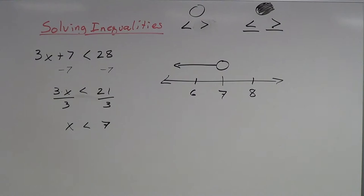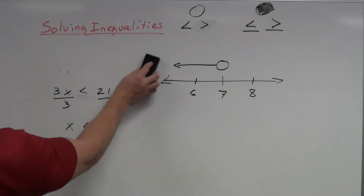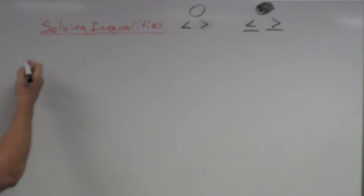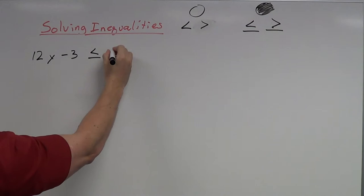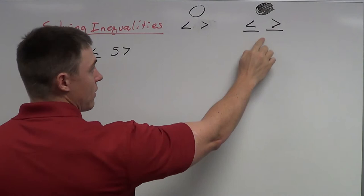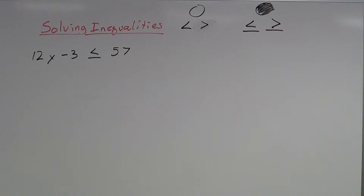So that's what it means when we solve inequalities — we're finding all of the solutions that work, not just one number, but many numbers. Let's try a different example: 12y minus 3 is less than or equal to 57. Now we've got a less than or equal to, so when we graph it, we're going to use a closed circle.